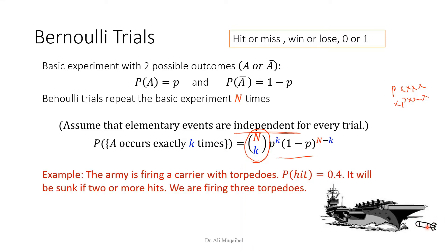Now let's take an example. The army is firing a torpedo at a carrier. The probability of hitting the carrier when firing a torpedo is 0.4. The carrier will sink if two or more torpedoes hit — one is not enough. In total, we are firing three torpedoes. This is either a hit or miss — this is a Bernoulli experiment, or Bernoulli trial — with capital N equal to 3.